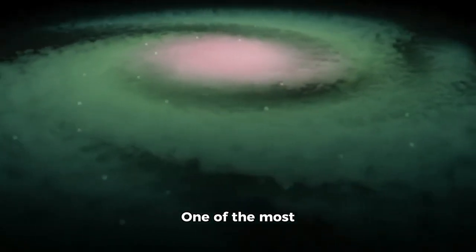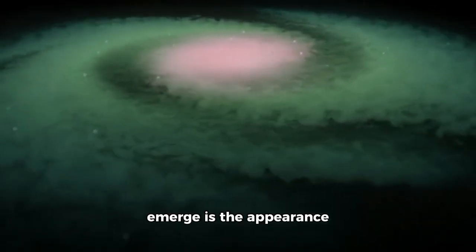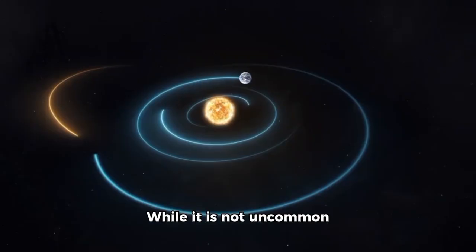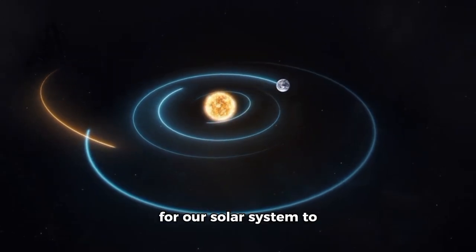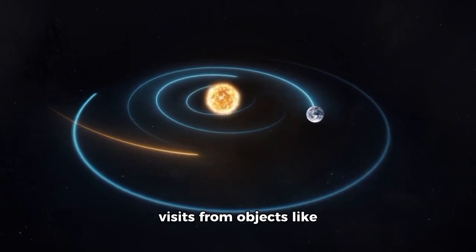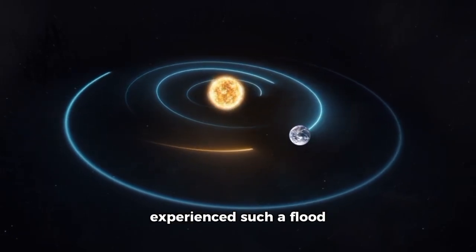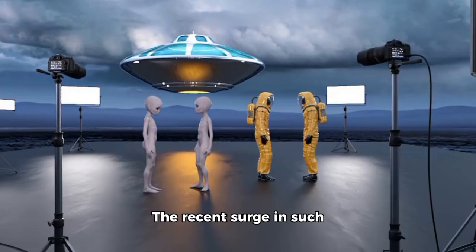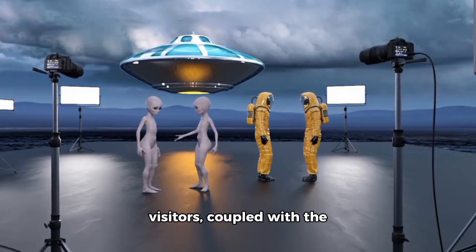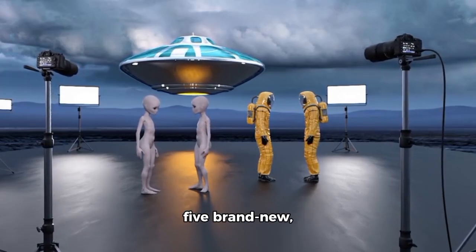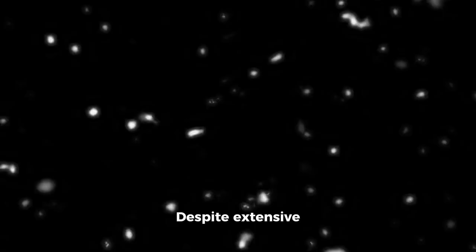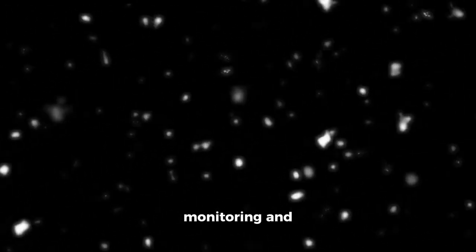One of the most fascinating mysteries to emerge is the appearance of unidentified objects within our solar system. While it is not uncommon for our solar system to occasionally experience visits from objects like Oumuamua, we have never experienced such a flood of stellar visitors before. The recent surge in such visitors, coupled with the five brand new unidentified objects, has left many scientists puzzled.